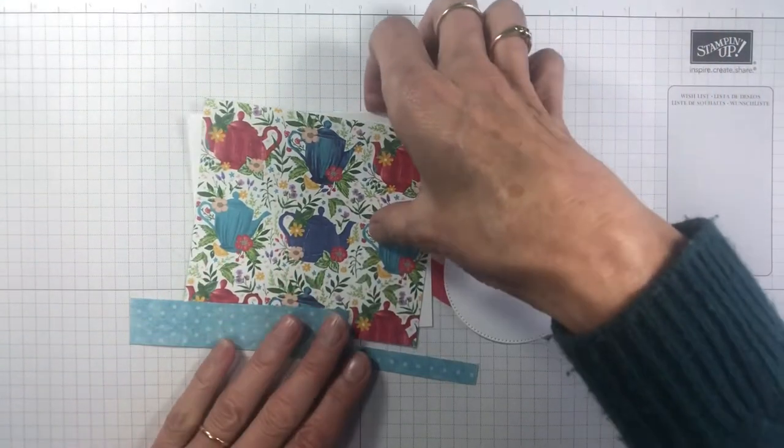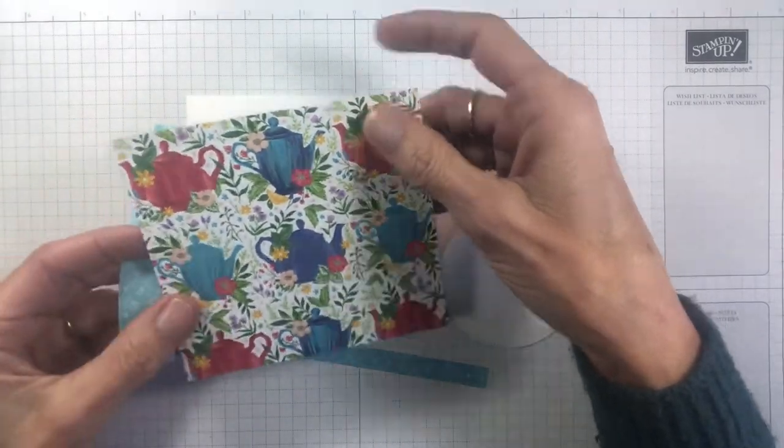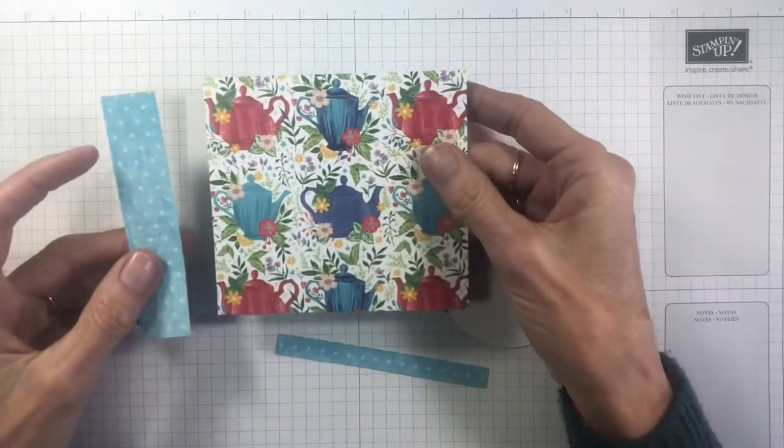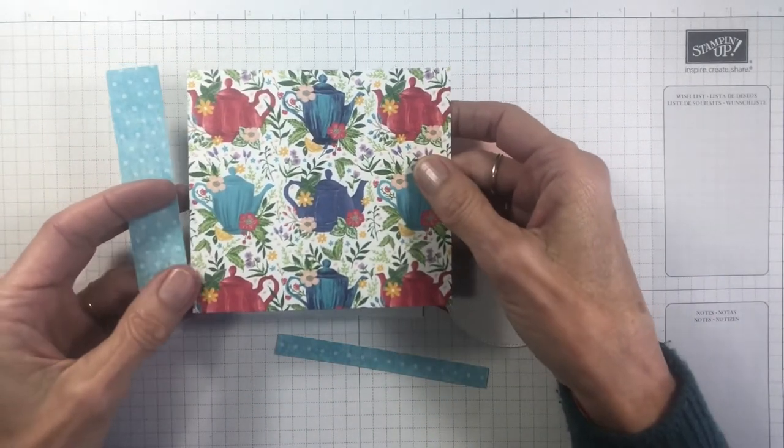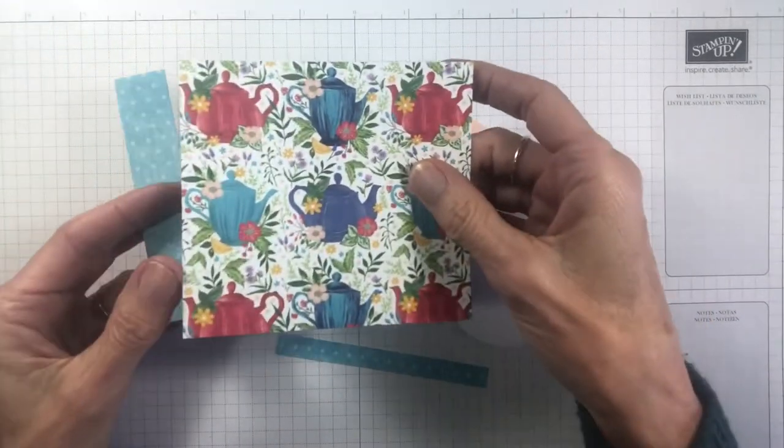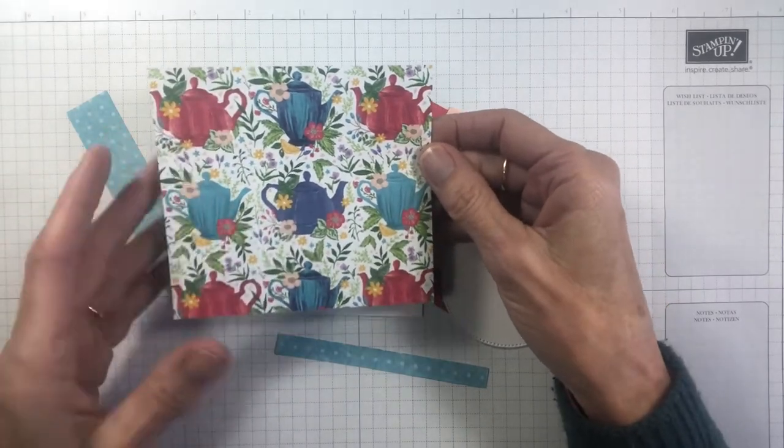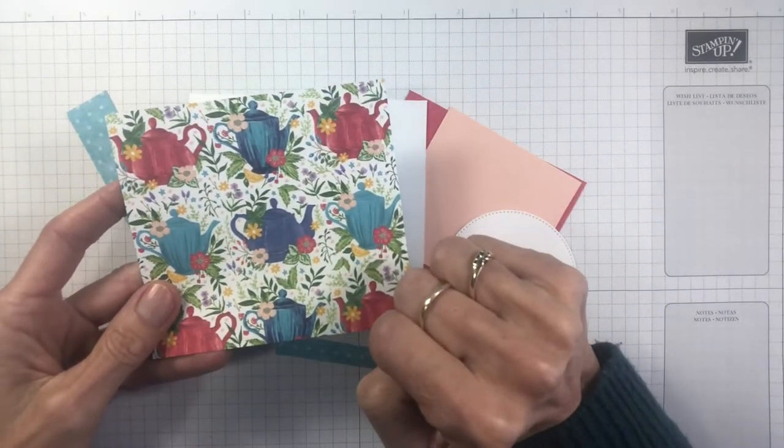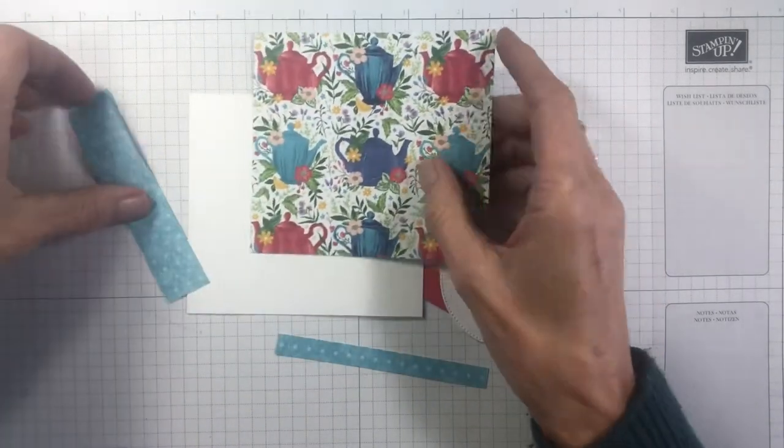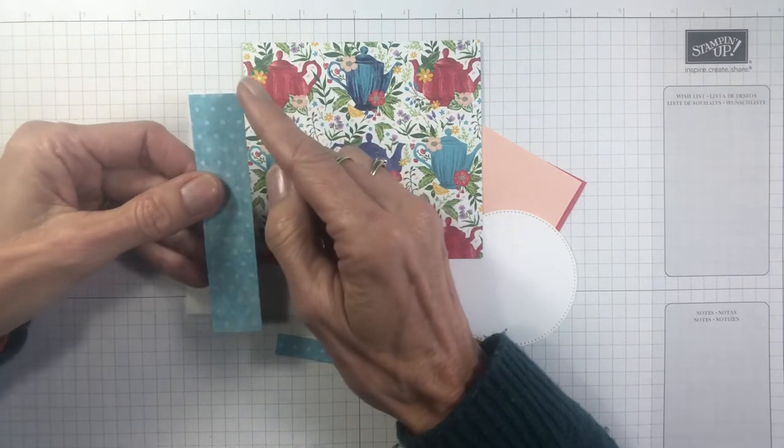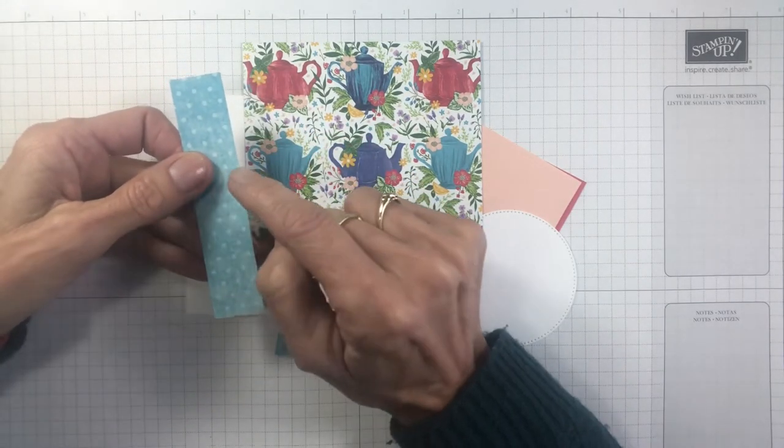You'll need a couple pieces of designer series paper. I've actually just used the reverse of this one from the Tea Boutique designer series paper. You can use different patterns. You'll need a larger piece that is 11.1 centimeters by 10.1 centimeters, or four and a quarter by four inches. The other piece is 2.1 centimeters by 10.1 centimeters, or three quarters of an inch by four inches.